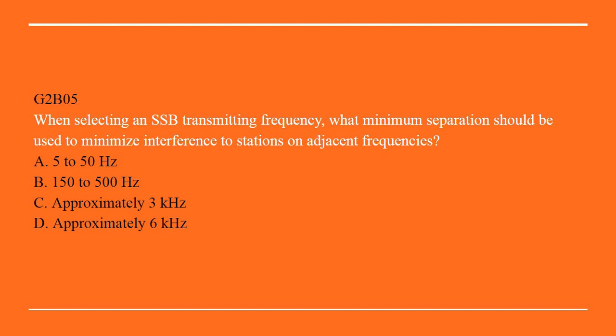G2B05: When selecting a single sideband transmitting frequency, what minimum separation should be used to minimize interference to stations on adjacent frequencies? A. 5 to 50 Hz. B. 150 to 500 Hz. C. Approximately 3 kHz. Or D. Approximately 6 kHz. Correct answer C: Approximately 3 kHz.